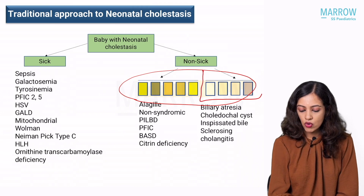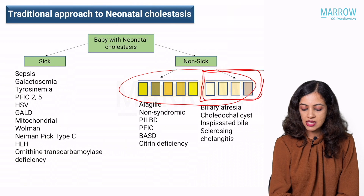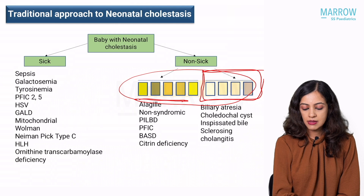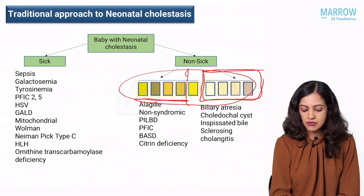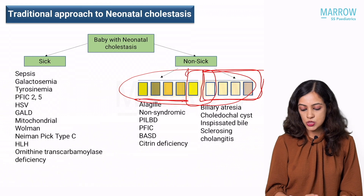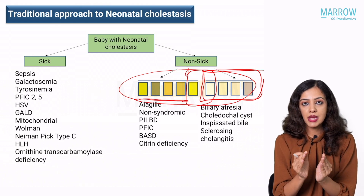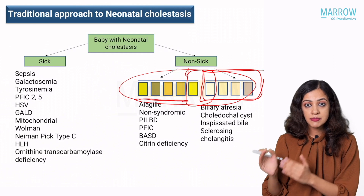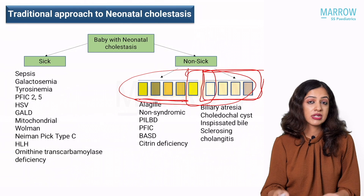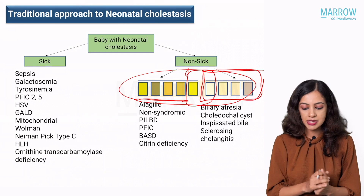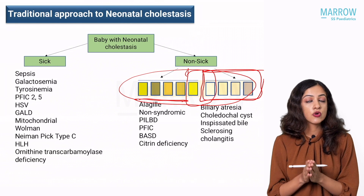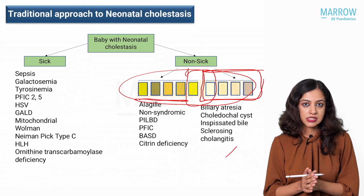These four on this side are considered pale stools, whereas these are pigmented stools. Sometimes the ones in between may be mistaken as ambiguous. So if it is neonatal cholestasis in a baby who is growing well with pale stools, the first entity you should think of is biliary atresia. Other causes with a similar presentation include choledochal cyst, inspissated bile plug syndrome, and sometimes even severe sclerosing cholangitis.